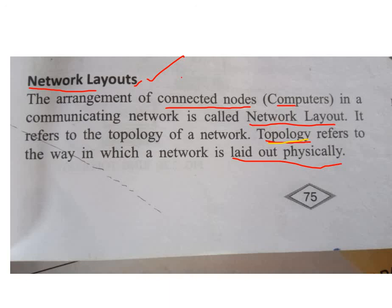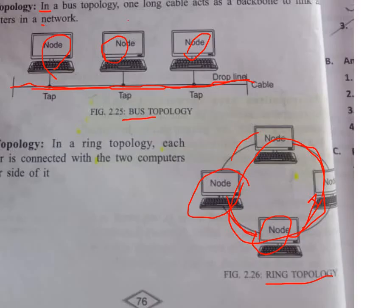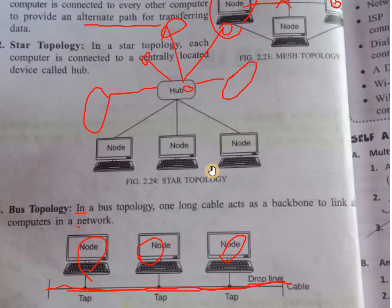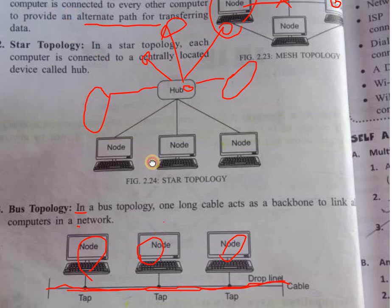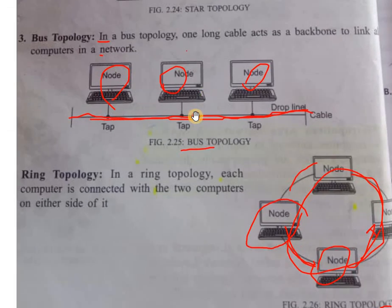There are basically three types of topology: the first one is Mesh, the second is Star, the third is Bus, and you can also write Ring Topology as the last one.